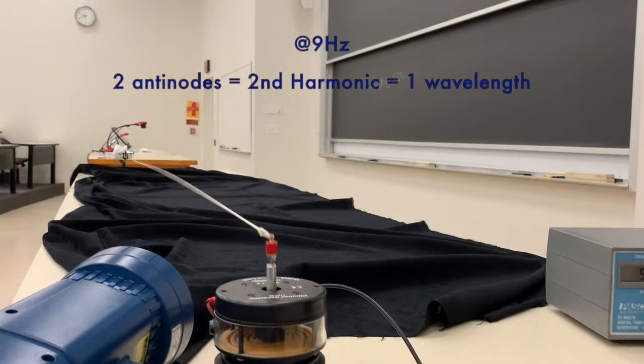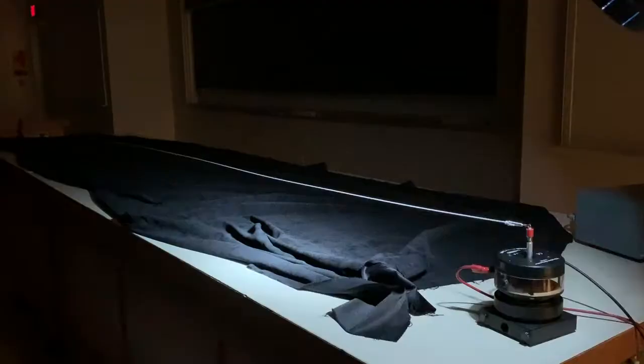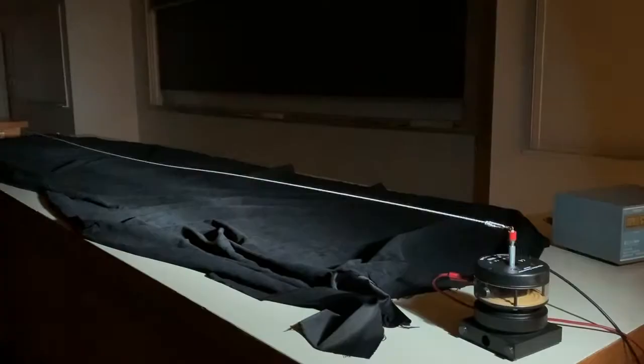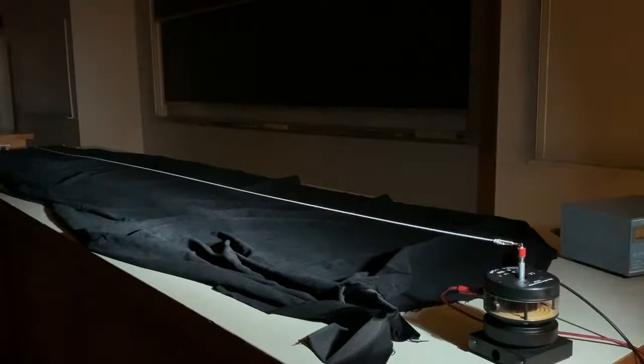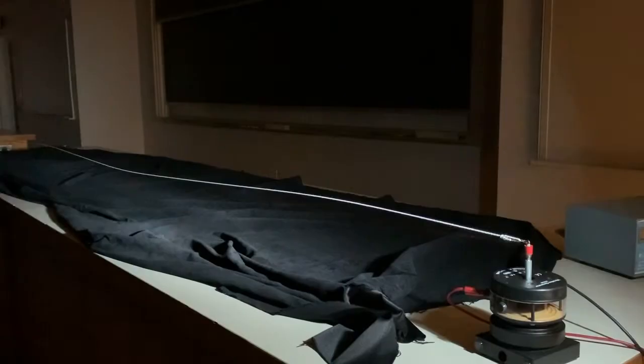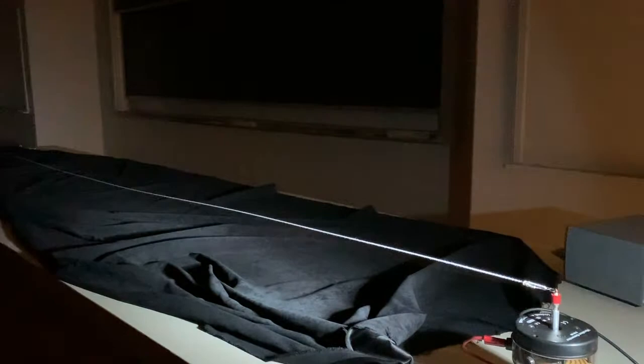Now we're going to switch over to strobe. This is back at 18 hertz. This is the fourth harmonic. We got four anti-nodes total. We can see two of them really well here. Down further along the table, it's not that good with the strobe light. All right. So let's focus in on the two that we can see really well.